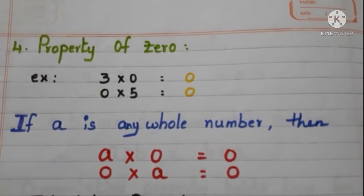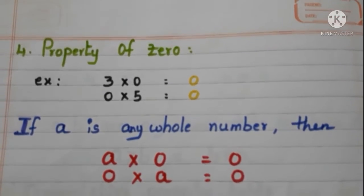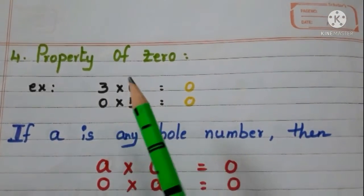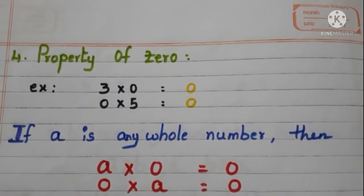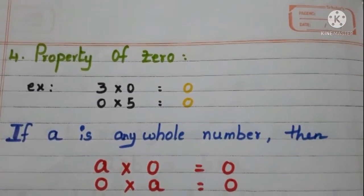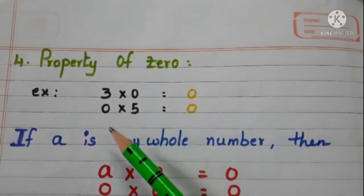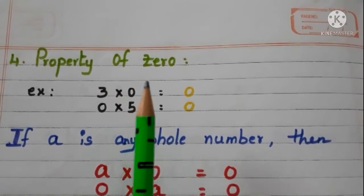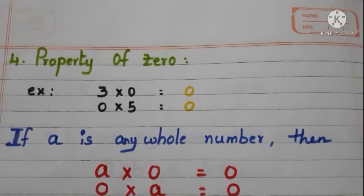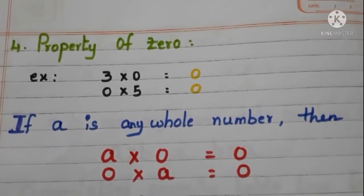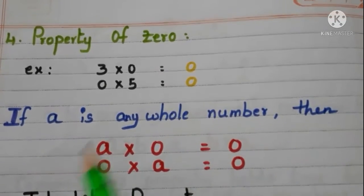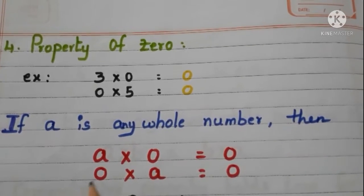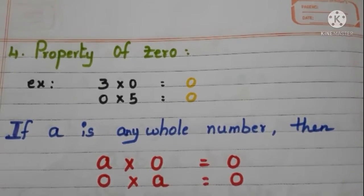Now, property of 0. Let us see with the example. Take a whole number 3 and multiply with 0. 3 into 0 is equal to 0. Now, take a whole number 5 and multiply with 0. 0 into 5 is 0. See here, if we multiply a whole number with 0, we are getting the product as 0. Let us say, if A is any whole number, then A into 0 is equal to 0, or else 0 into A is equal to 0.